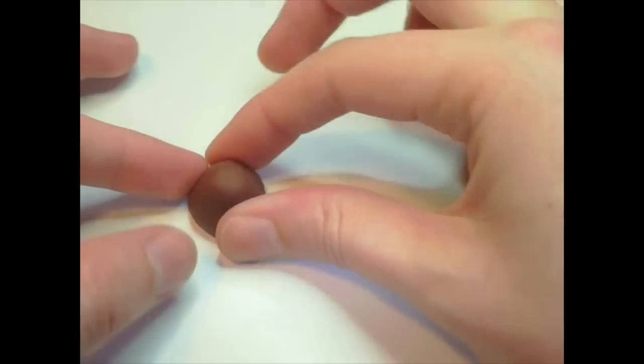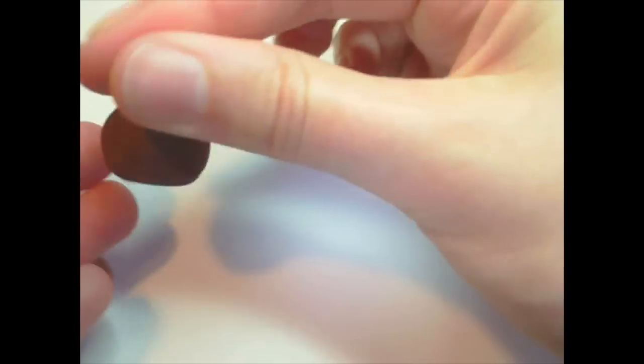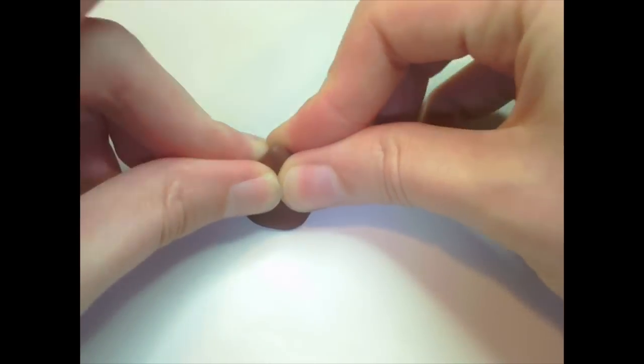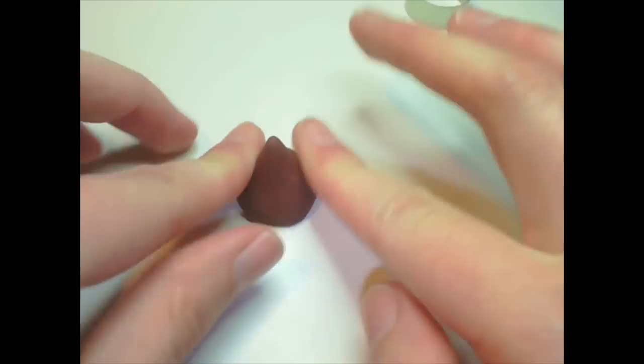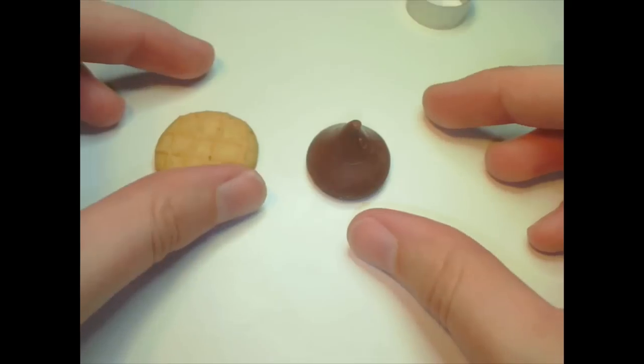Then for the chocolate part, you can flatten the ball of clay and then just keep squishing it until a little peak forms at the top. Then shape it as best you can to the real candy. And you'll get something like that.